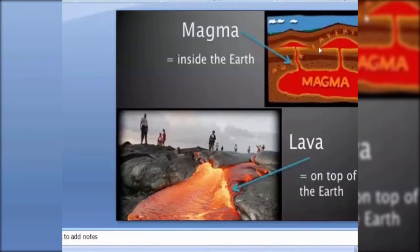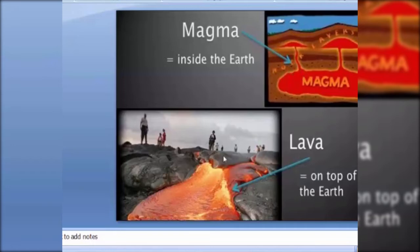Here you can see the magma chamber, which is situated in the mantle layer inside of the earth. When the molten rock material stays inside of the earth, it is known as magma.